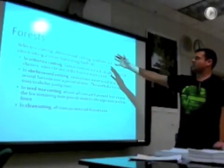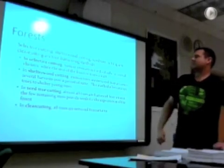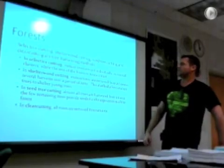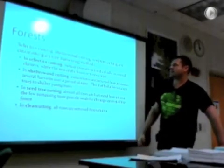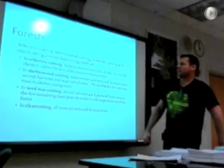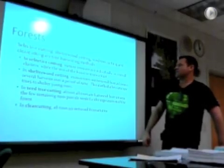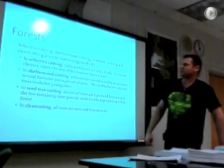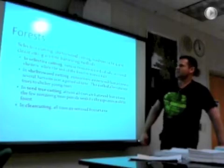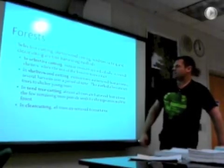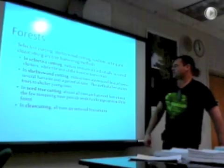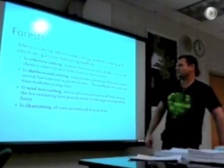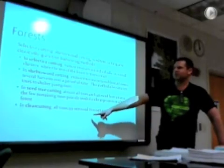There are different ways to cut down trees. Selective cutting means mature trees are cut individually or in small clusters while the rest of the forest remains intact. Shelter wood cutting means mature trees are removed from a forest in several harvests over a period of time, allowing mature trees to shelter younger trees. Seed tree cutting means almost all trees are harvested from an area, with the few remaining trees providing seeds for regeneration of the forest. And clear cutting — this is the worst one — means cut everything down.